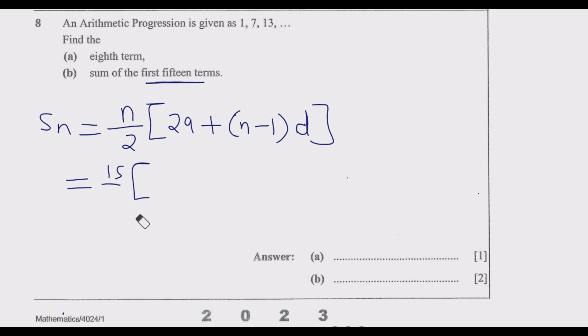So it's just a matter of substituting. It will be 15/2 times [2 × 1 + (15-1) × 6]. So 15 over 2, then multiply by 2 times 1, which is 2, then plus 15 minus 1, which is 14, times the common difference, which is 6.